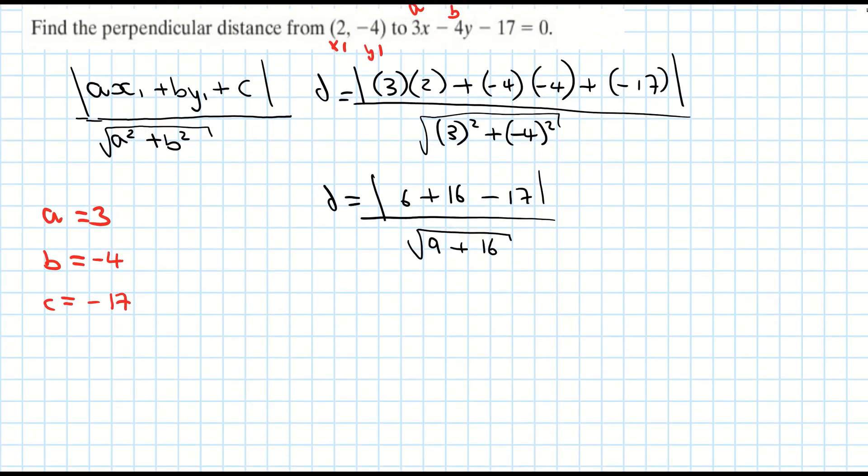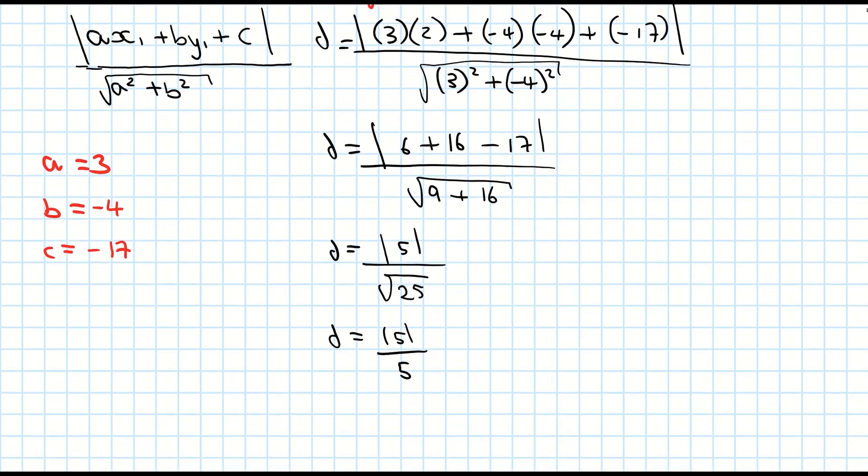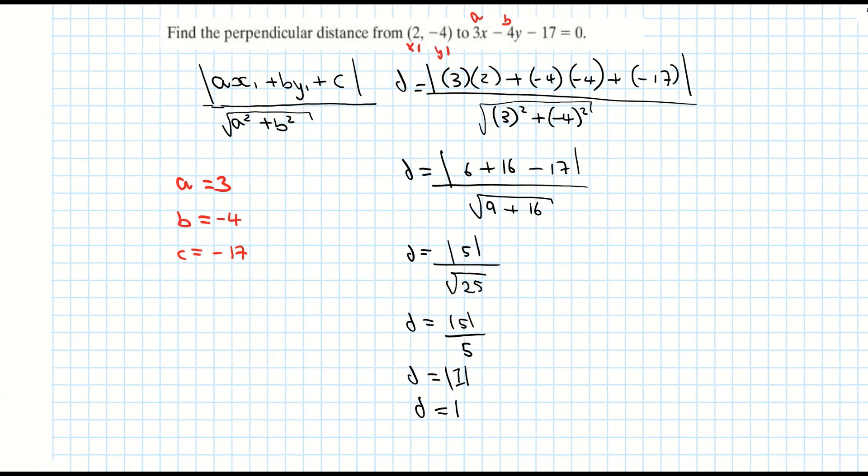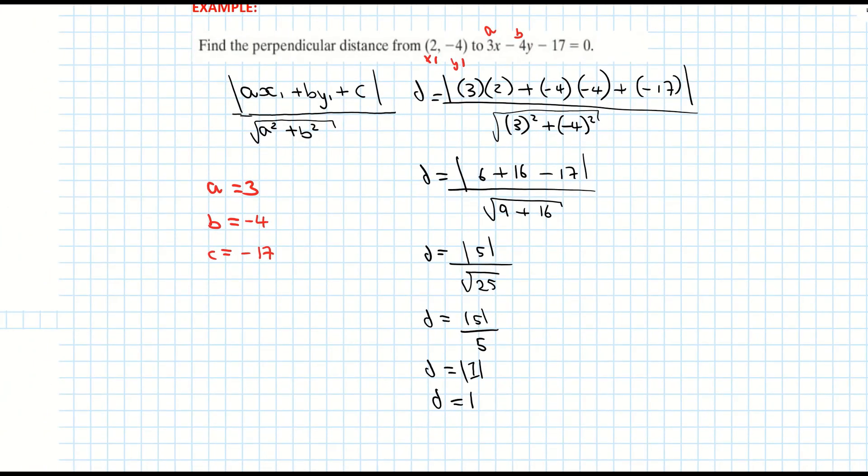Adding the top line, we get distance is equal to 6 plus 16 is 22, take away 17 is 5 over the square root of 25. So d equals 5 over 5. When I divide 5 by 5, I get 1. So d equals 1. The distance between the point and my line is 1 unit.